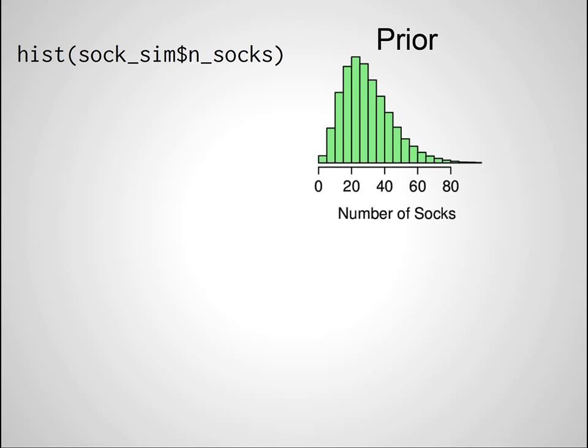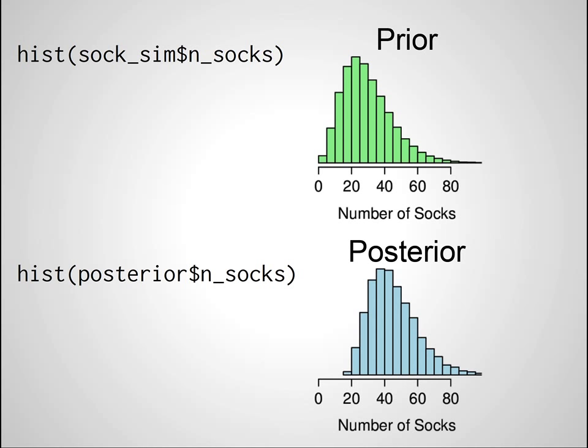So let's look at this distribution. We started out with the prior that we defined ourselves, and this is the posterior distribution we got after having used the data. It's still pretty broad — spanning roughly 20 to 80 — which means it's still quite uncertain how many socks were in Carl Brumann's washing machine. But we can still make a best guess using the median, which gives us 44. Luckily, Carl Brumann later tweeted there were 21 pairs and three single socks — that's 21 times 2 plus 3, a total of 45 socks. We were off by only one sock. I think that's pretty good.